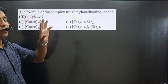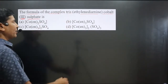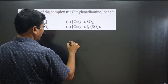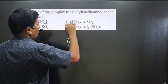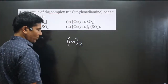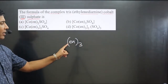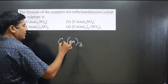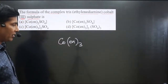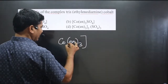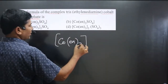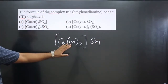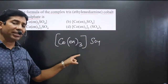Let's write the chemical formula. 'Tris' means three, and ethylenediamine is represented by 'en', so we write (en)₃ — en whole thrice. Then we have cobalt as the central metal atom in +3 oxidation number. The anionic part is sulfate, SO₄, giving us the cationic and anionic portions of the complex.